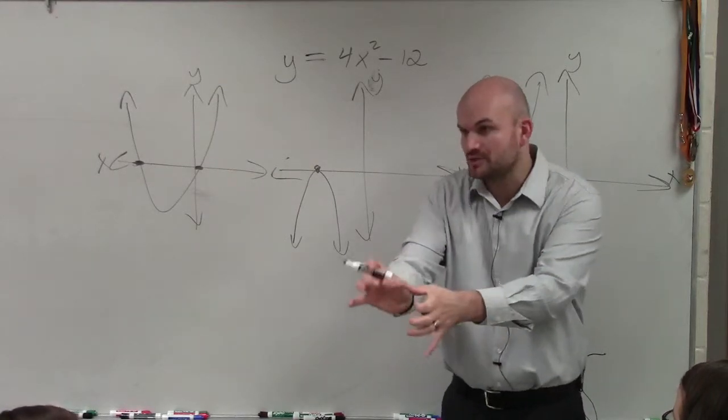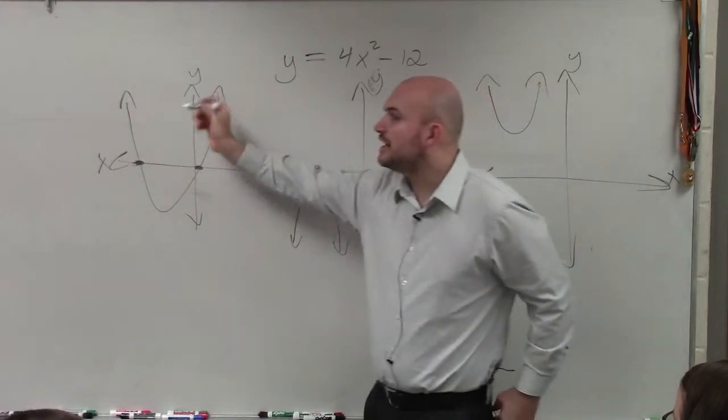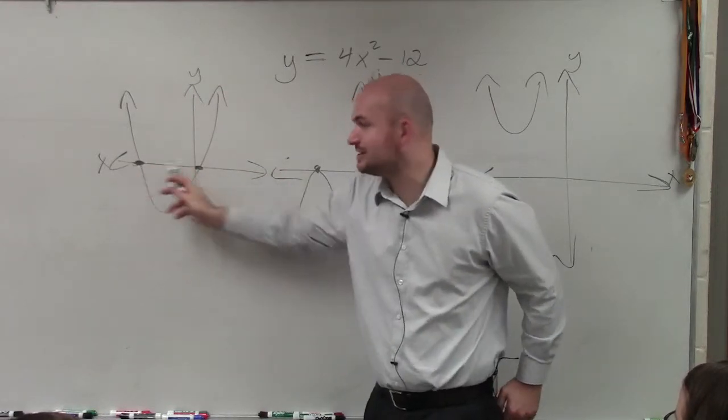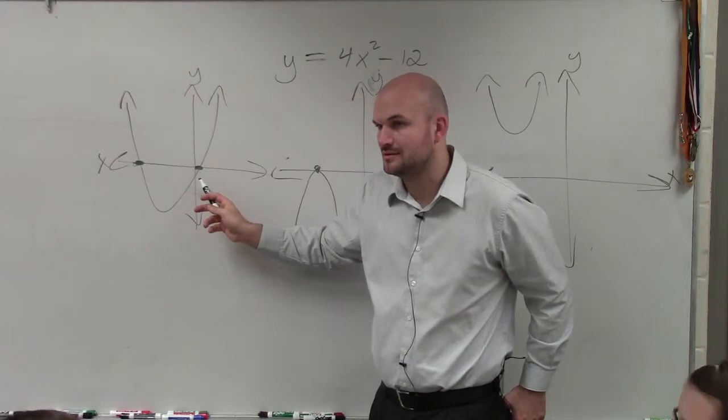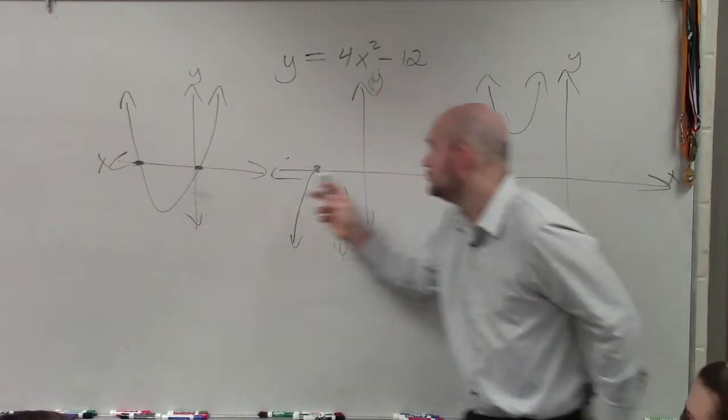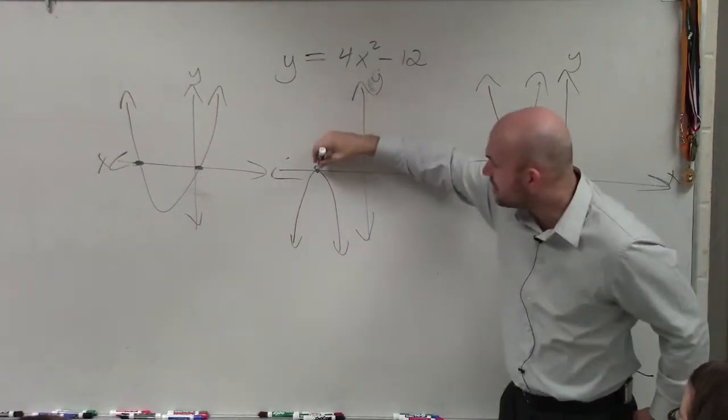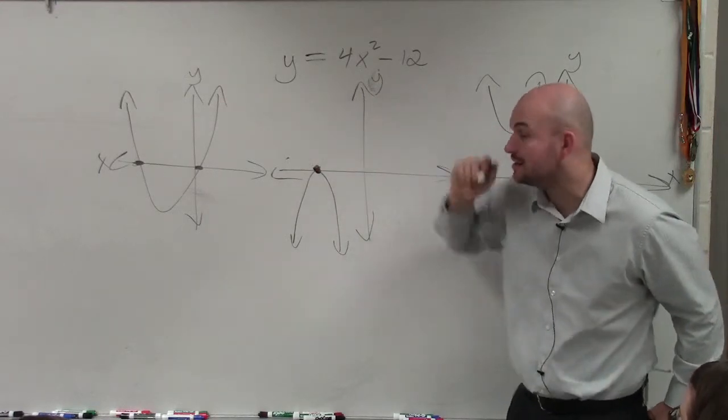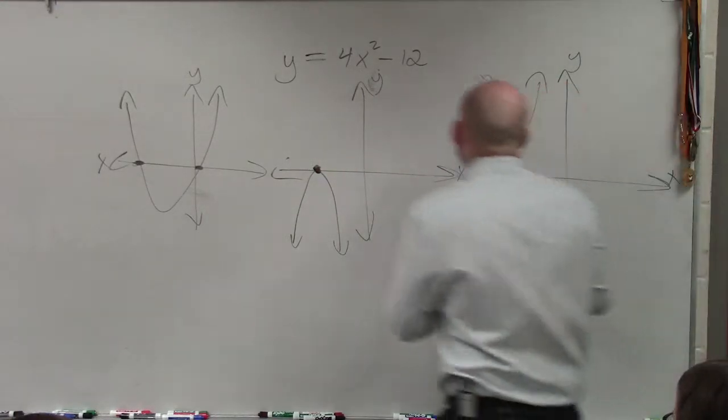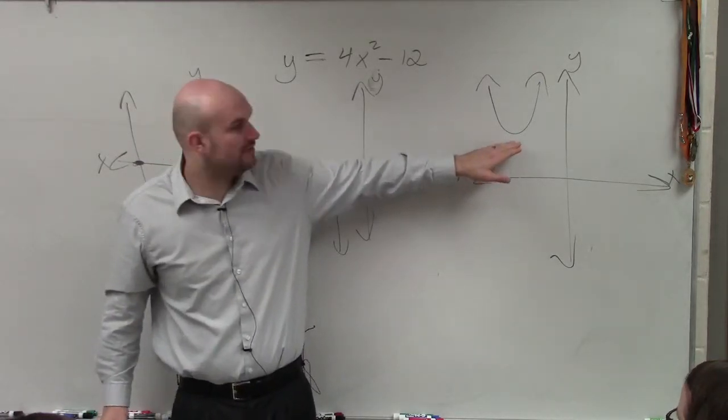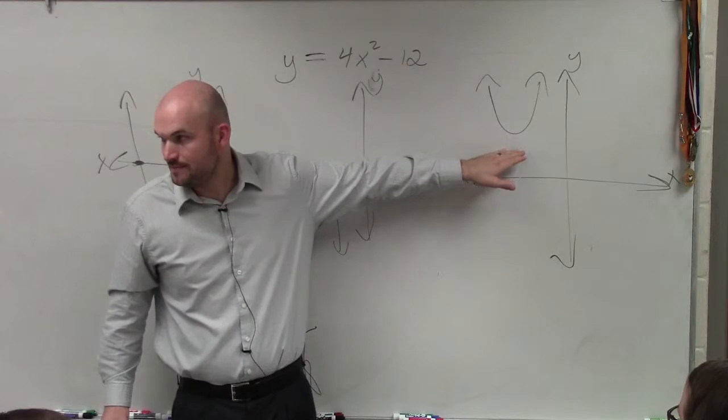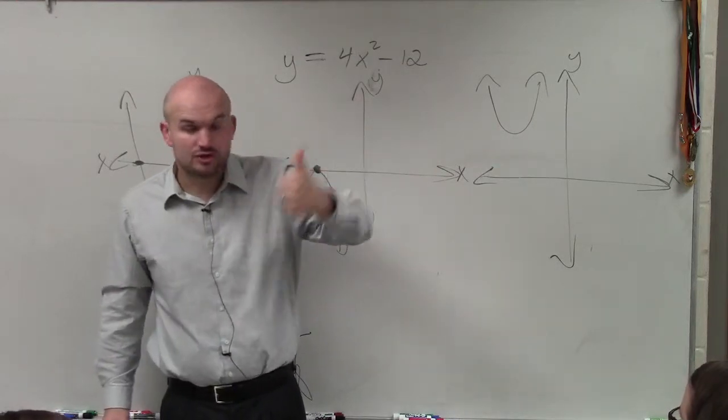So you could have quadratics that crossed the x-intercept twice, crossed the x-intercept once, or never crossed the x-intercept. So there's three possibilities: two solutions, one solution,